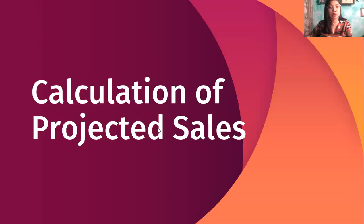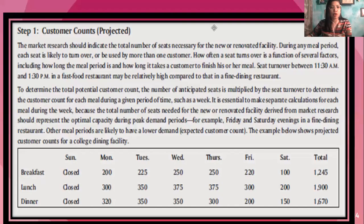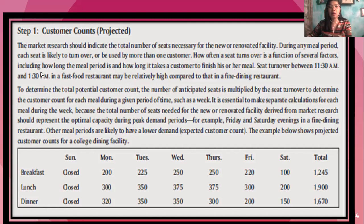Now let's go to the calculation of projected sales. For step one, market research should indicate the number of seats necessary for the new or renovated facility. There are different meal periods. During each meal period, how many turnovers are likely to happen — this can be predicted not only by a single customer but by more than one person.